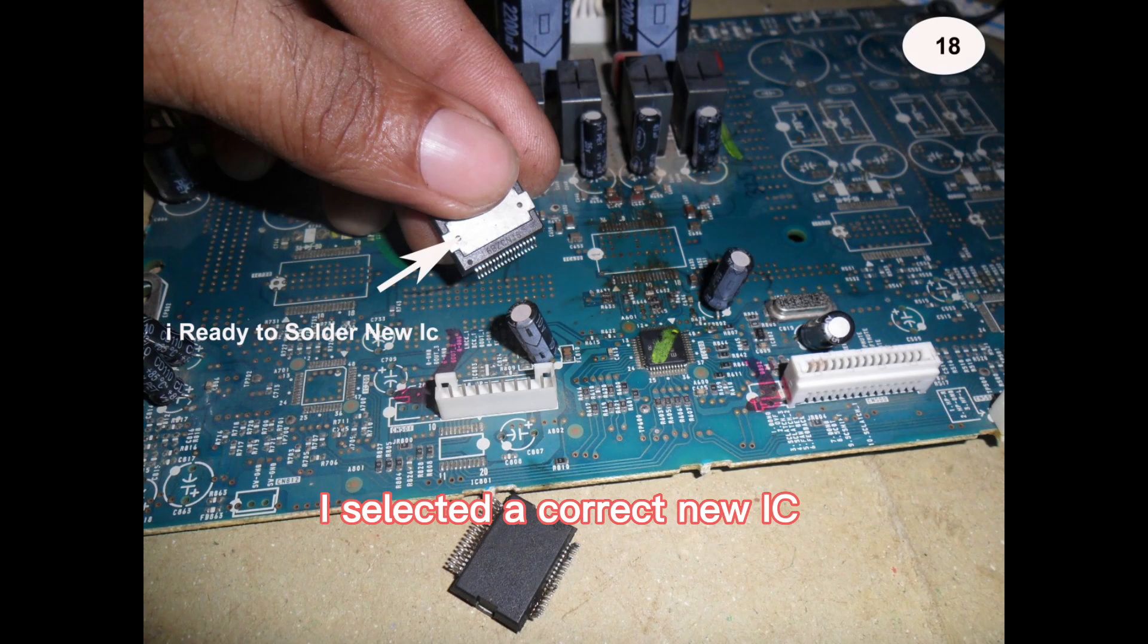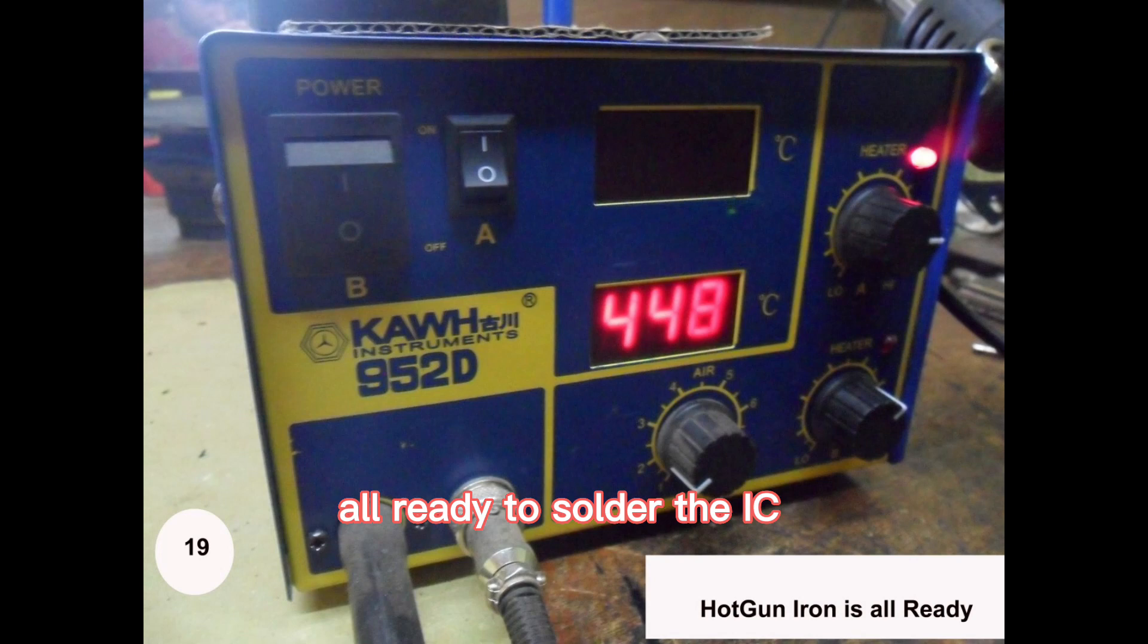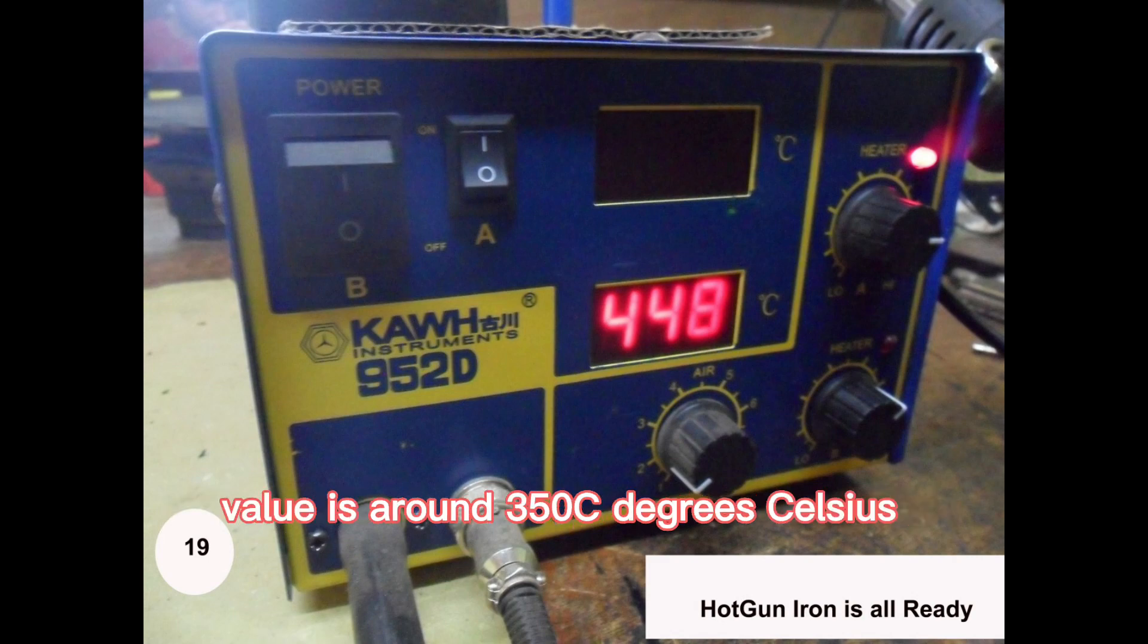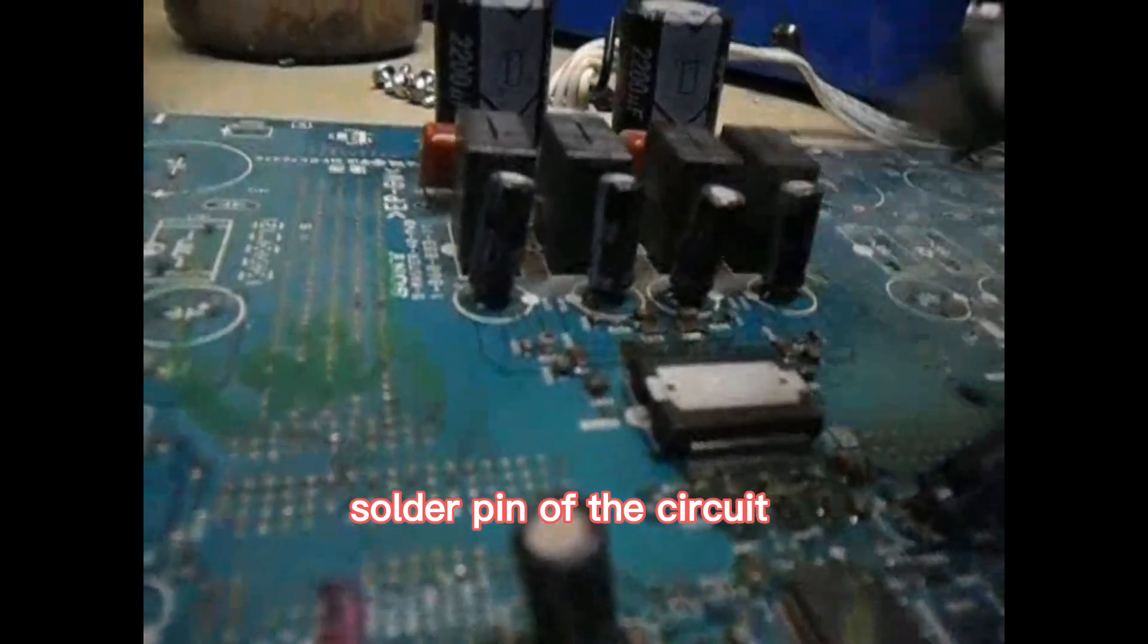Then I selected a correct new IC corresponding to this IC number from my store. All ready to solder the IC. Here at the hot rework station note that the temperature value is very high and the appropriate value is around 350 degrees Celsius. First, the IC should be installed on the correct solder pin of the circuit and soldered.